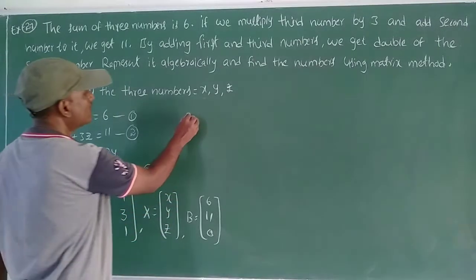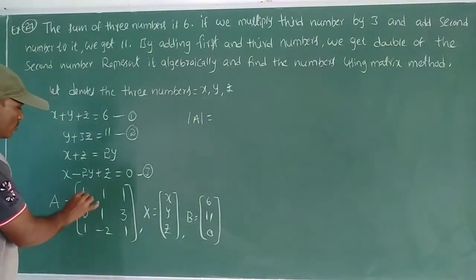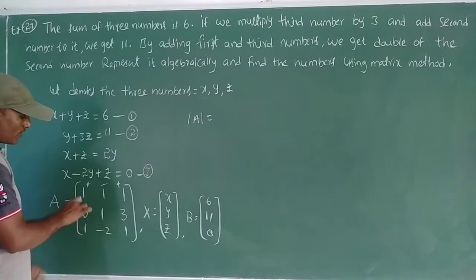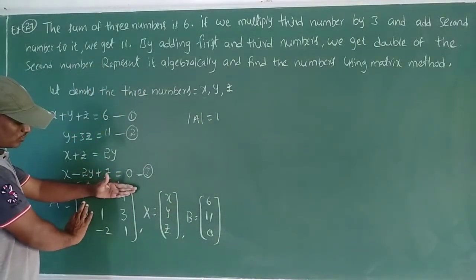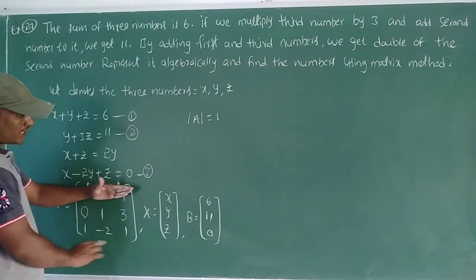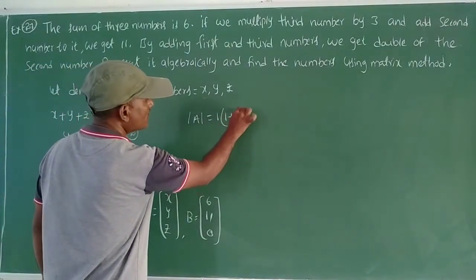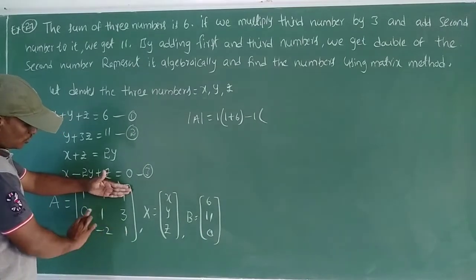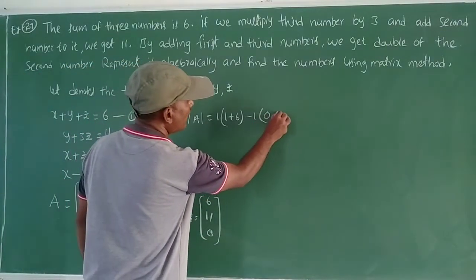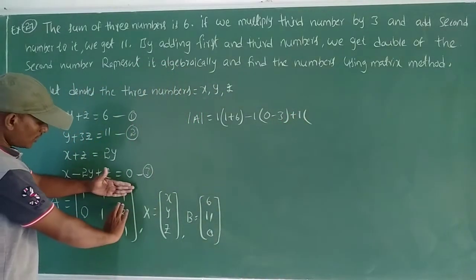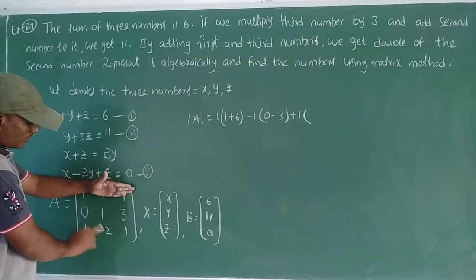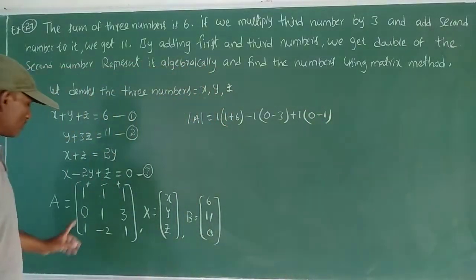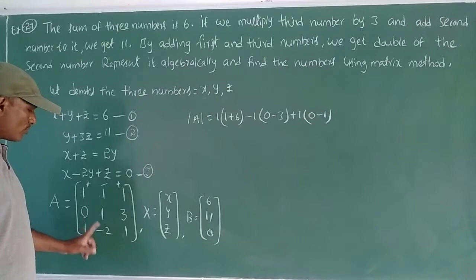Now find delta A. Using the sign sequence plus, minus, plus for the first row: 1 into (1×1 minus 3×(−2)) gives 1 plus 6 equals 7. Minus 1 into (0×1 minus 3×1) gives minus(−3) equals plus 3. Plus 1 into (0×(−2) minus 1×1) gives minus 1.